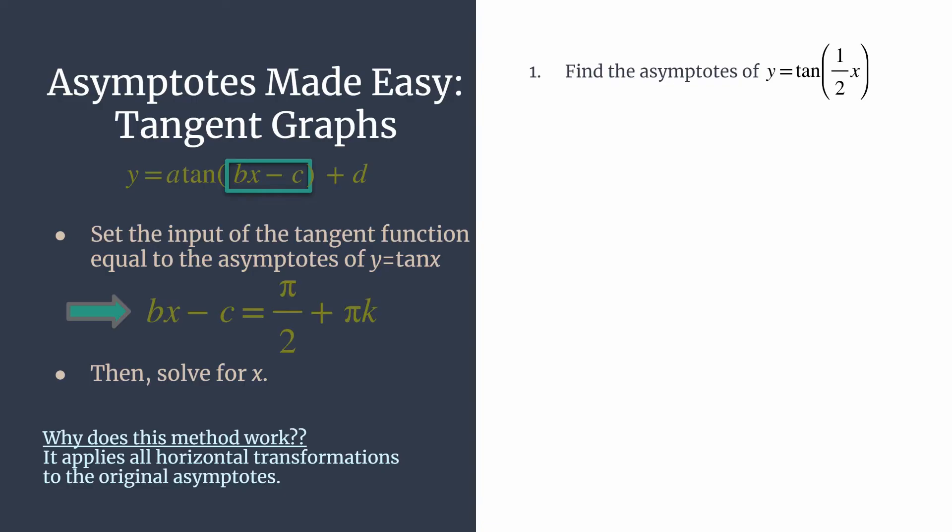First, we need to find the input of the function. So that's everything here in parentheses. And so we'll take one half x, and we'll set that equal to the parent asymptotes, pi over two, plus pi k.